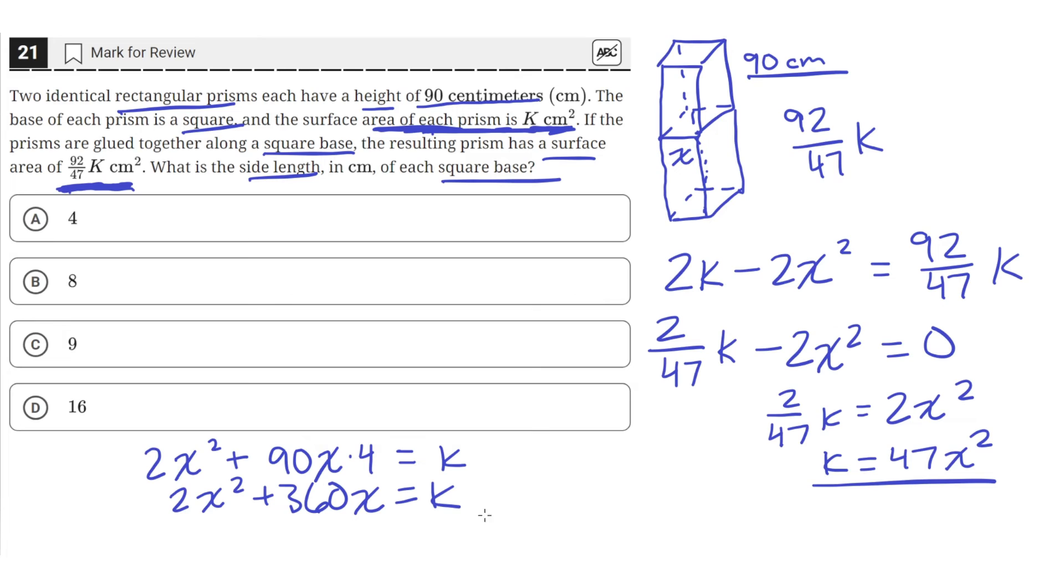Now we have two equations for k. Let's set k equal to k. Here, I'll write this equation over here: k equals 2x² plus 360x. So now this is our second equation for k. Let's make some room here.